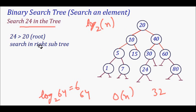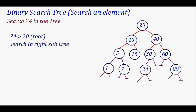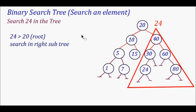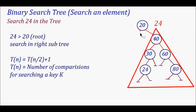So let's search for 24 in this tree. We compare 24 with the root element 20 — 24 is greater than 20. Because of the BST property, everything in the left subtree is smaller than the root, so I'm sure that 24 will be found in the right subtree. I can remove half of the elements. If T(n) is the number of comparisons for searching a key, the input just gets divided by two.